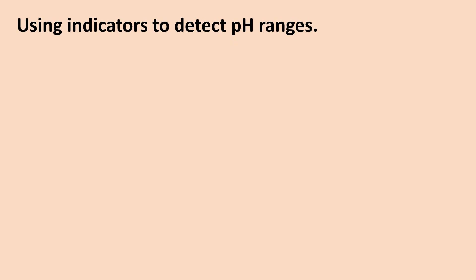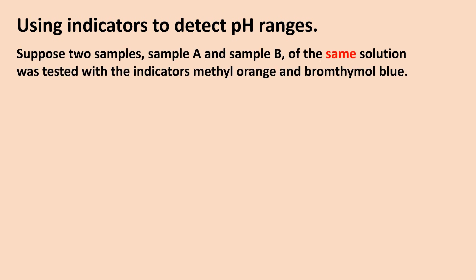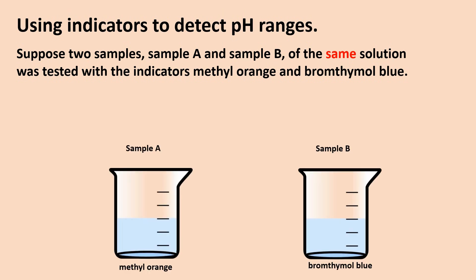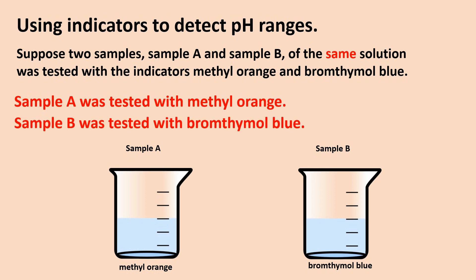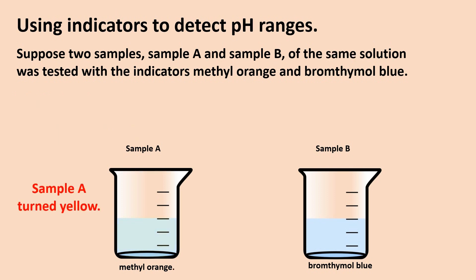Using indicators to detect pH ranges: suppose two samples, Sample A and Sample B, of the same solution were tested with the indicators methyl orange and bromthymol blue. Sample A was tested with methyl orange and Sample B was tested with bromthymol blue. Sample A turned yellow and Sample B turned yellow as well.